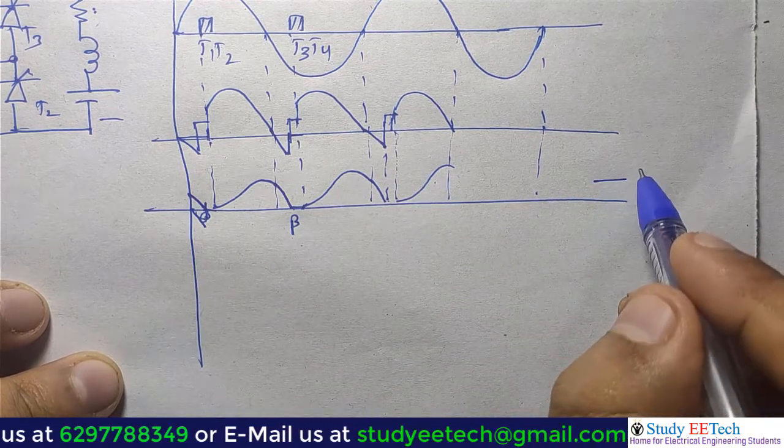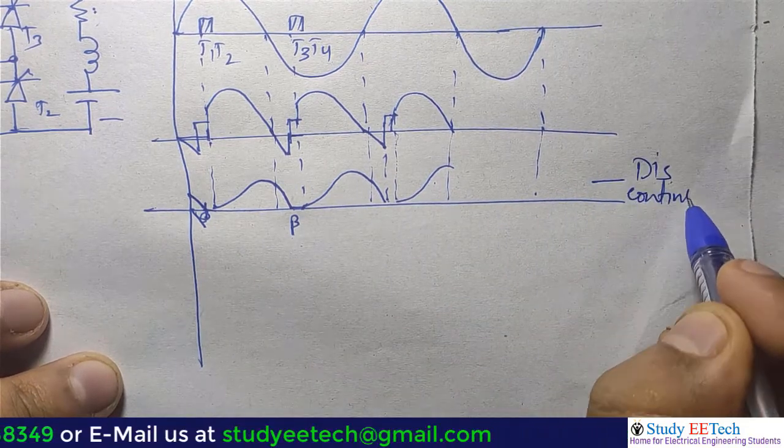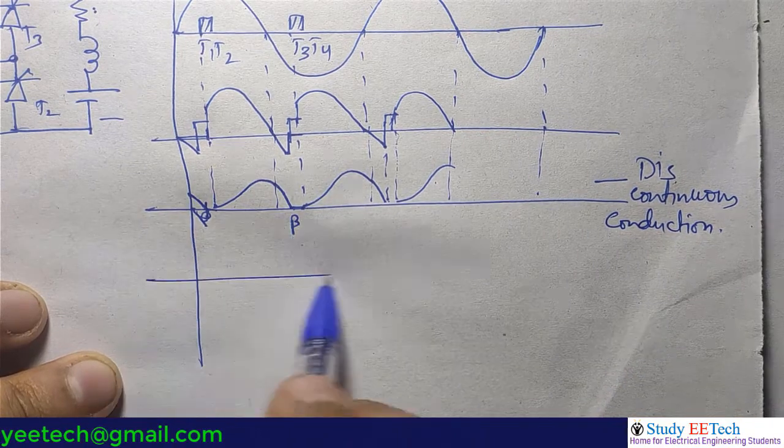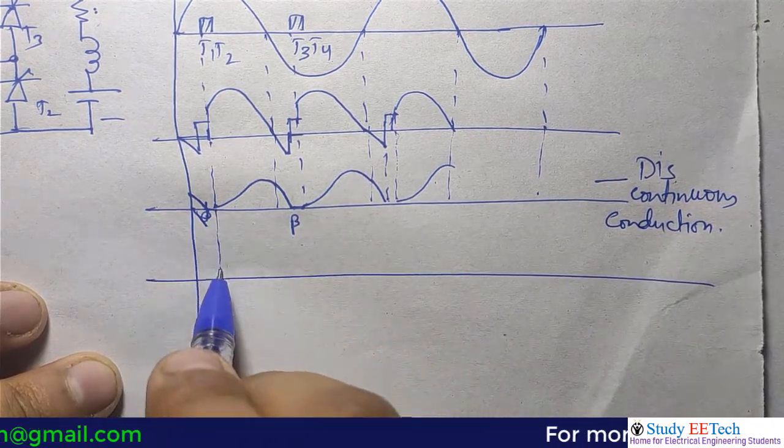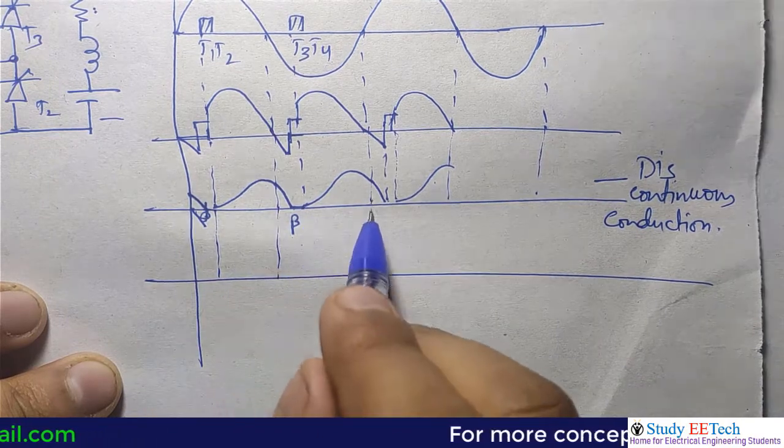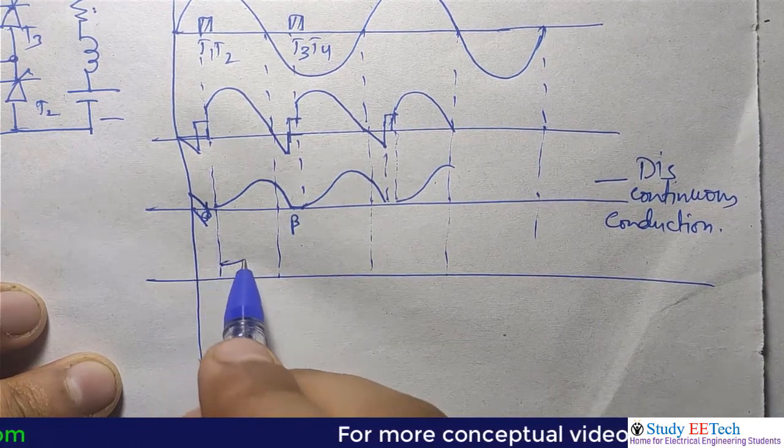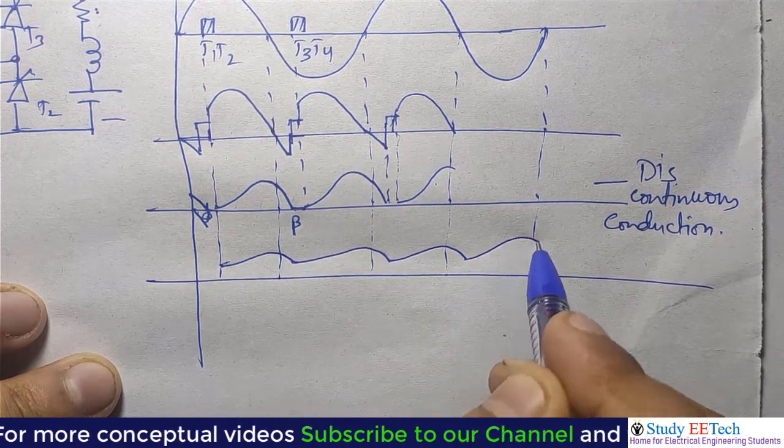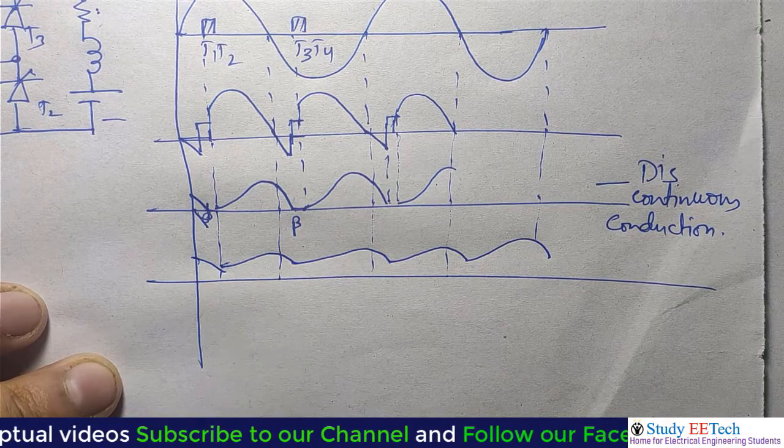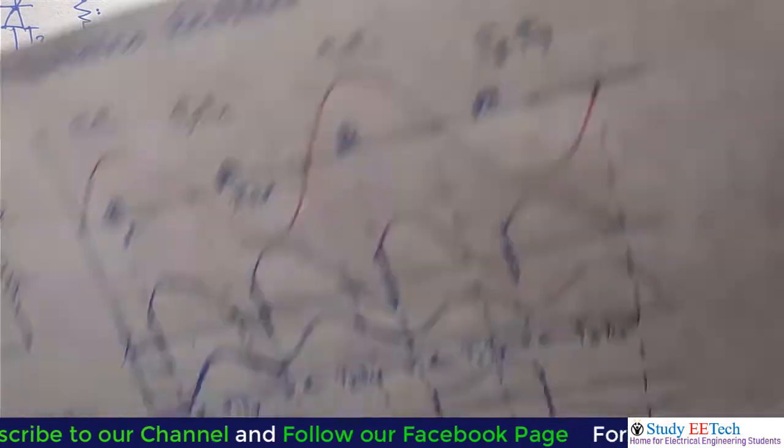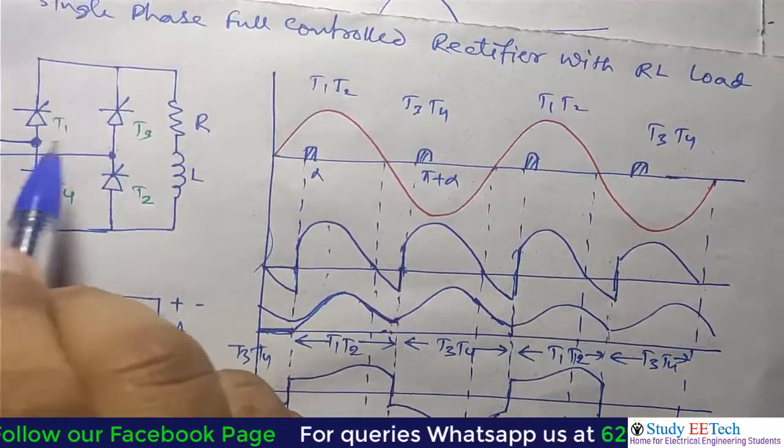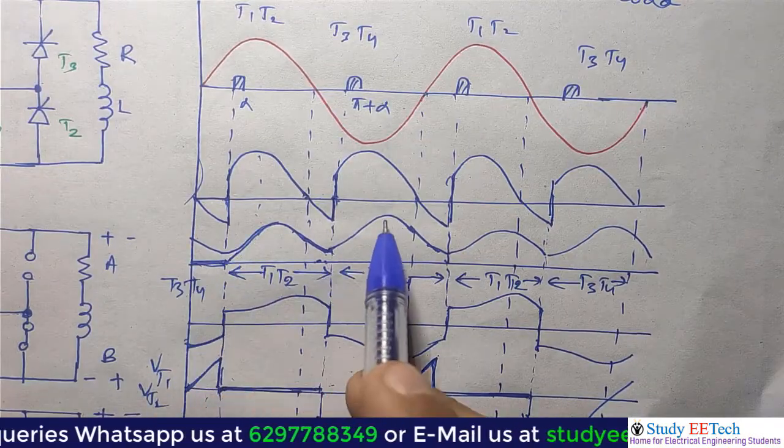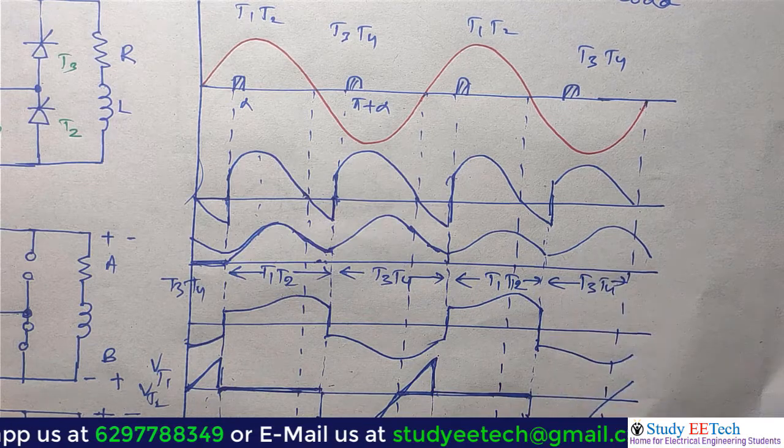So this type is called the discontinuous conduction. Now another type of conduction is possible where current is actually never zero. In case of R-L load we saw this. In case of R-L load the current waveforms are not zero which is called continuous conduction.